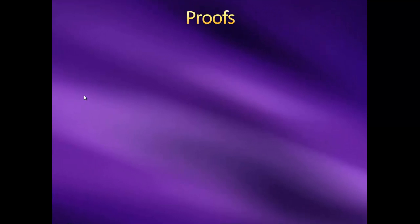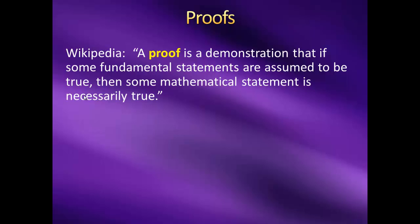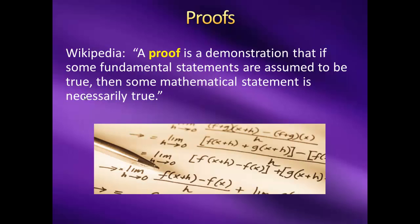Wikipedia defines a proof as follows: A proof is a demonstration that if some fundamental statements are assumed to be true, then some mathematical statement is necessarily true. In other words, given some sort of premises, we need to reach some kind of conclusion in a logical manner. The idea is that somebody else could look at your solution, follow it step by step, and reach the same conclusion.